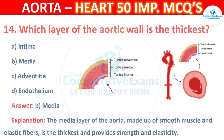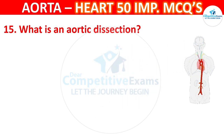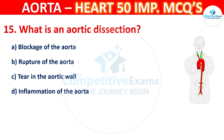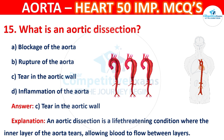Question number 15: What is an aortic dissection? Options are blockage of the aorta, rupture of the aorta, tear in the aortic wall, or inflammation of the aorta. The correct answer is C — tear in the aortic wall. An aortic dissection is a life-threatening condition where the inner layer of the aorta tears, allowing blood to flow between the layers.